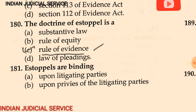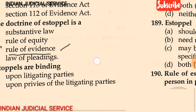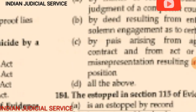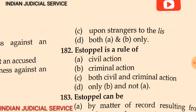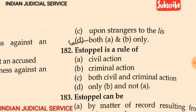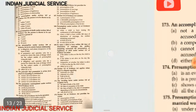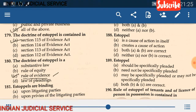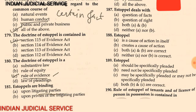Question 181: Estoppels are binding upon — (A) litigating parties, (B) upon a privy of a litigating party, (C) upon a stranger to the suit, (D) both A and B. The answer is option D: both A and B. Estoppel is binding upon litigating parties and upon the privies of litigating parties.